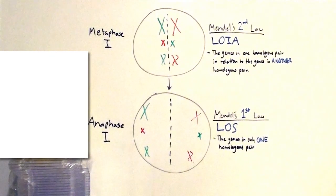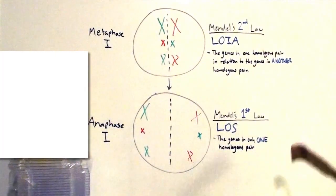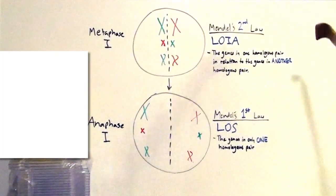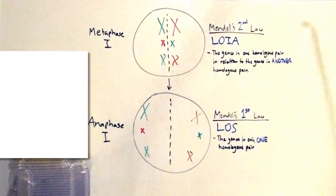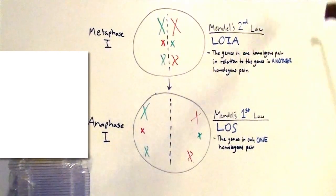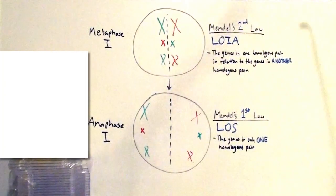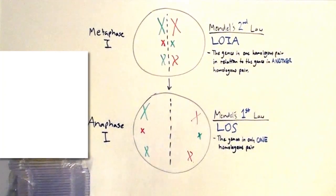It does not help that you are taught the law of segregation first simply because it is Mendel's first law, and the law of independent assortment second because it is Mendel's second law, when really the law of independent assortment happens first and the law of segregation happens second. So here's my explanation.